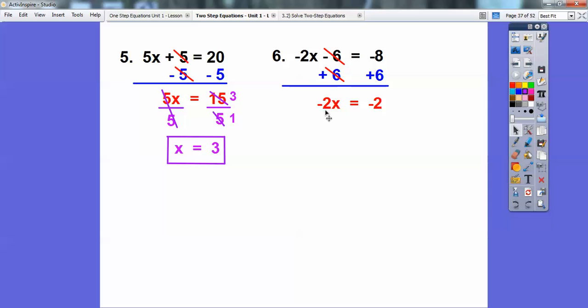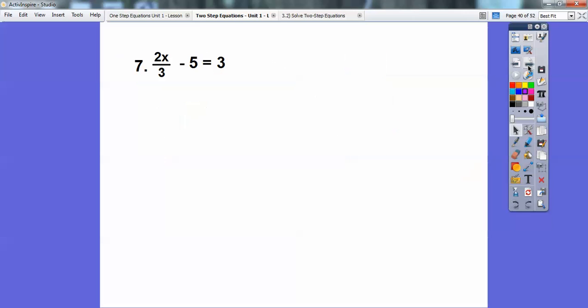So here I have negative 2x equals negative 2. Now I'm going to divide by this number right here, not 2. I'm going to divide by negative 2. Don't lose the negatives, you guys. I see that a lot, including me. So you get x equals positive 1, because over here we have a negative divided by negative, and it's equal to 1.